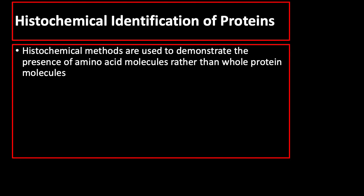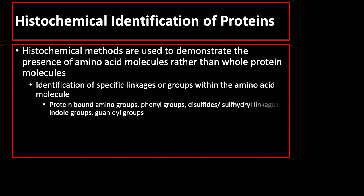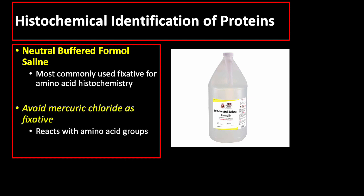Histochemical methods are used to demonstrate the presence of amino acid molecules rather than whole protein molecules. They are based upon identification of specific linkages or groups within amino acid molecules such as protein-bound amino groups, phenyl groups, disulfides and sulfhydryl linkages, indole groups, and guanidyl groups. Neutral buffered formal saline is the most commonly used fixative for amino acid histochemistry, and it is important to avoid fixatives such as mercury chloride which react with amino acid groups.